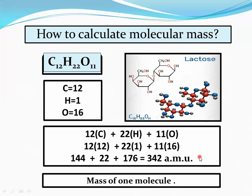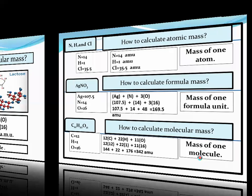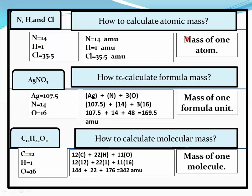Recap: how to calculate atomic mass, formula mass, and molecular mass. Atomic masses from the periodic table — nitrogen 14 AMU, hydrogen 1 AMU, chlorine 35.5 AMU. The mass of one atom is considered as the atomic mass. Formula mass of silver nitrate AgNO3: silver 107.5, nitrogen 14, oxygen 16 — multiply and add to get 169.5 AMU. Mass of one formula unit is considered as the formula mass.